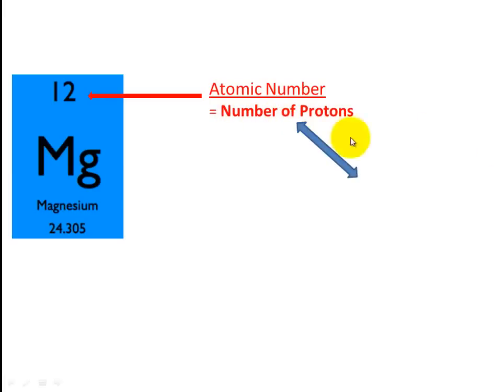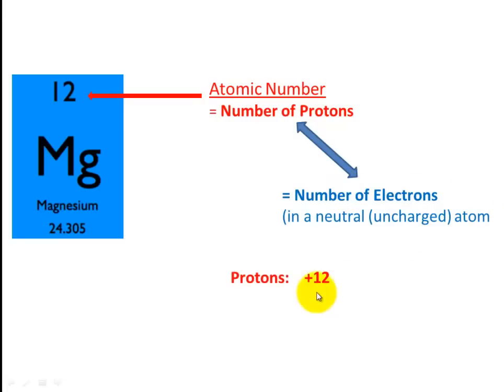So the Atomic Number is 12 for Magnesium. So the number of Protons must be equal to the number of Electrons in a Neutral or Uncharged atom. So if the positive charge must always equal the negative charge in an Uncharged atom, so the Protons equal to 12.